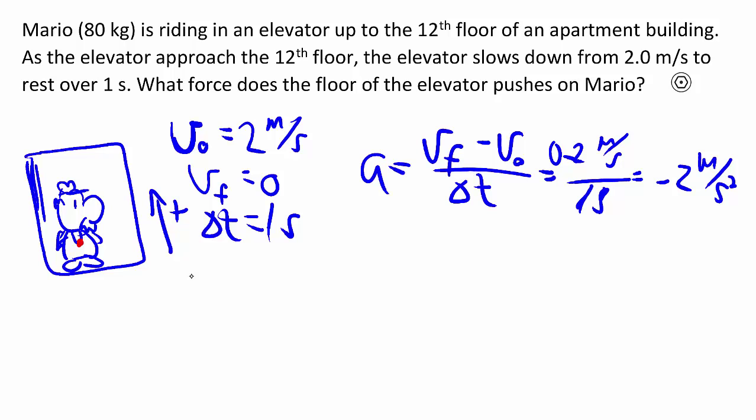Free body diagram. Mario is touching one thing, and he's on Earth, so he has Mg, and he has this Fn, which is whatever the floor is pushing against him. Again, this normal means 90 degrees, 90 degrees to the floor.